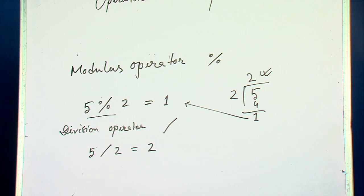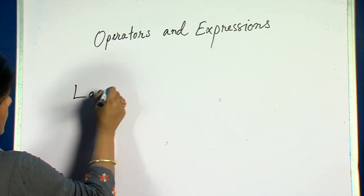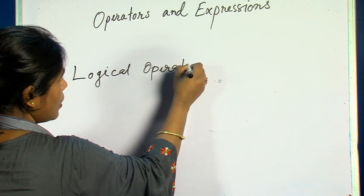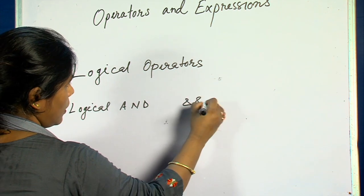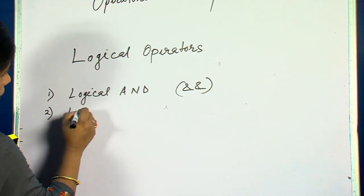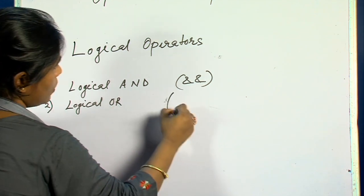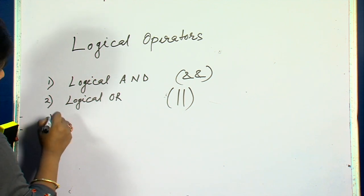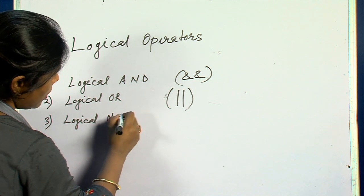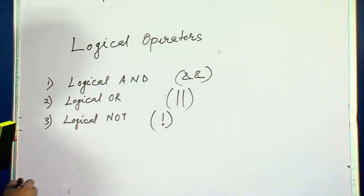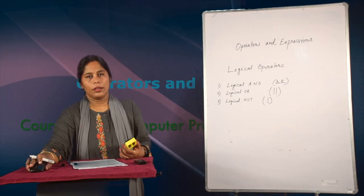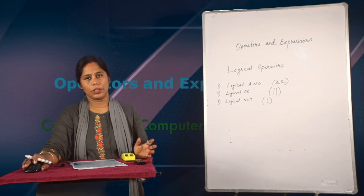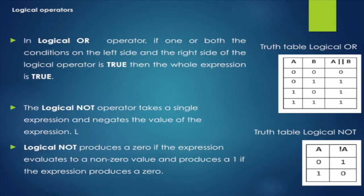There are three logical operators in C language. First is logical AND, denoted by the double ampersand symbol. Second is logical OR, denoted by double pipe symbol. Third is logical NOT, denoted by the negation symbol. Logical AND is used to simultaneously evaluate two conditions; if both conditions are true, then the whole expression is true.